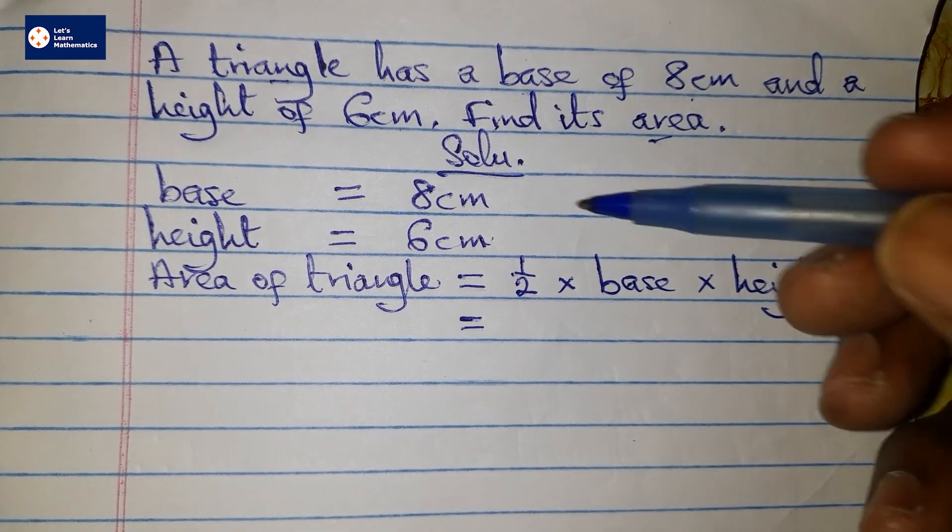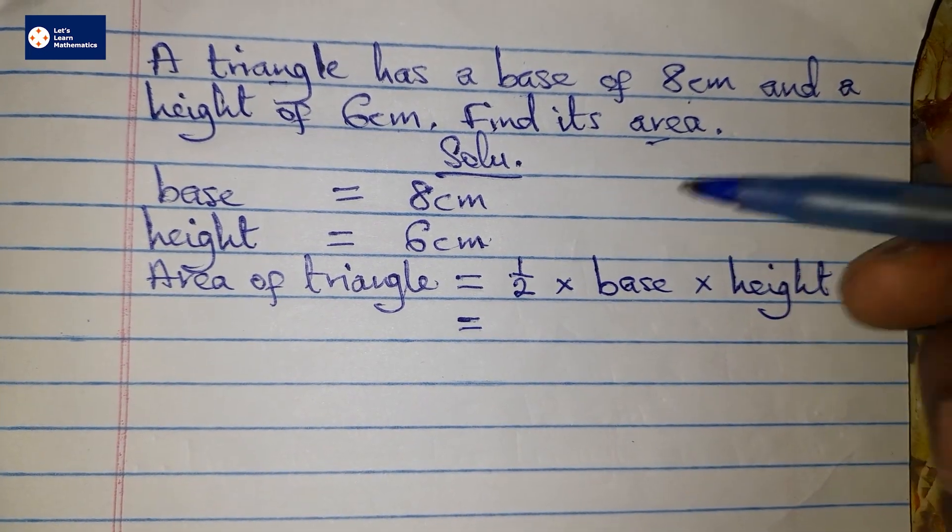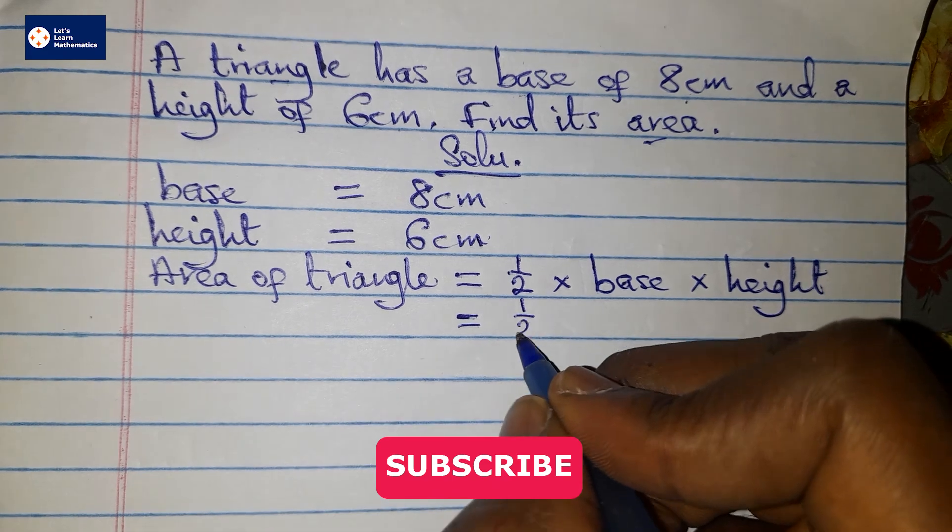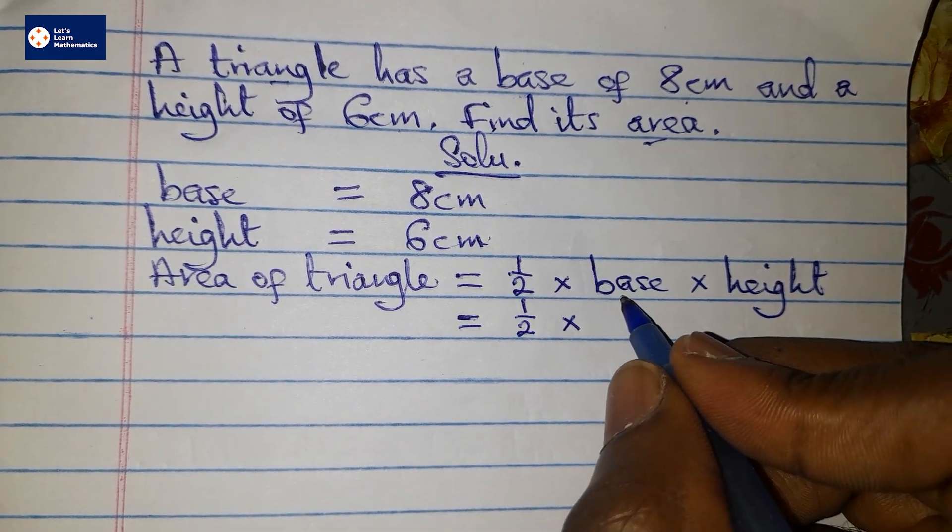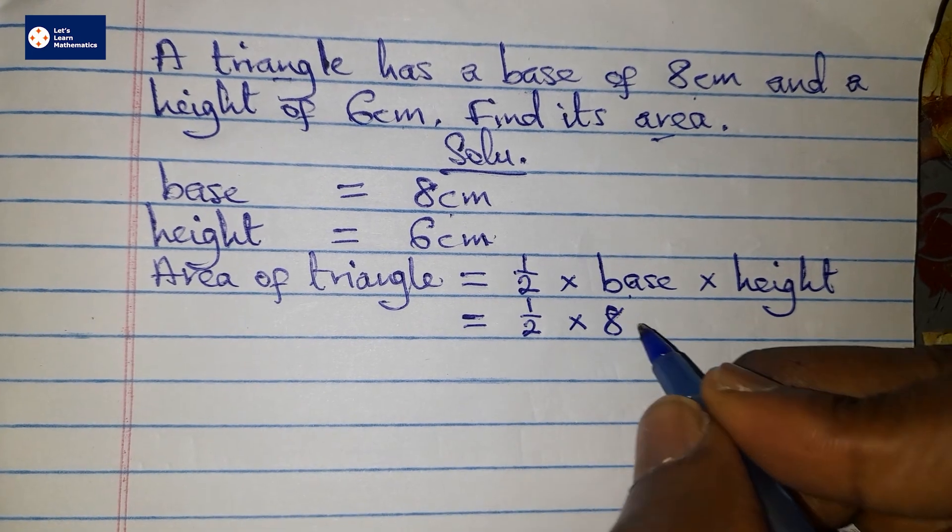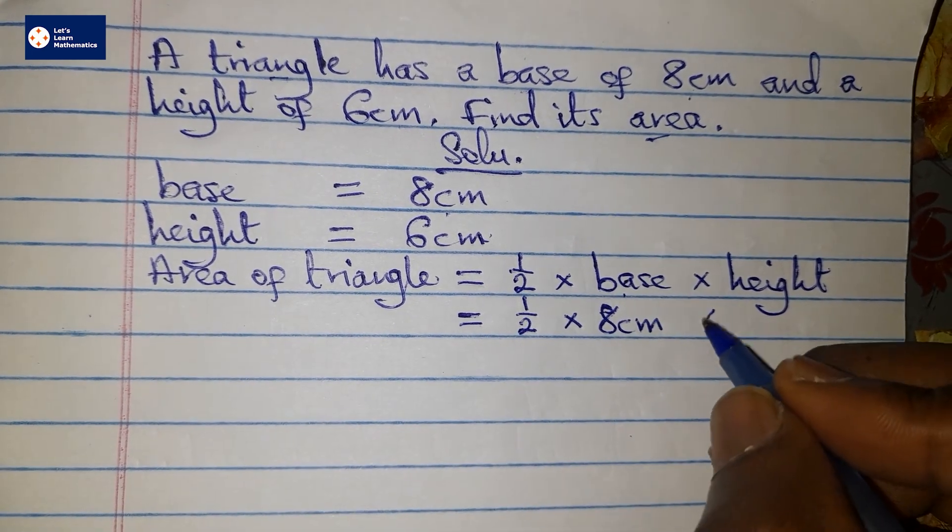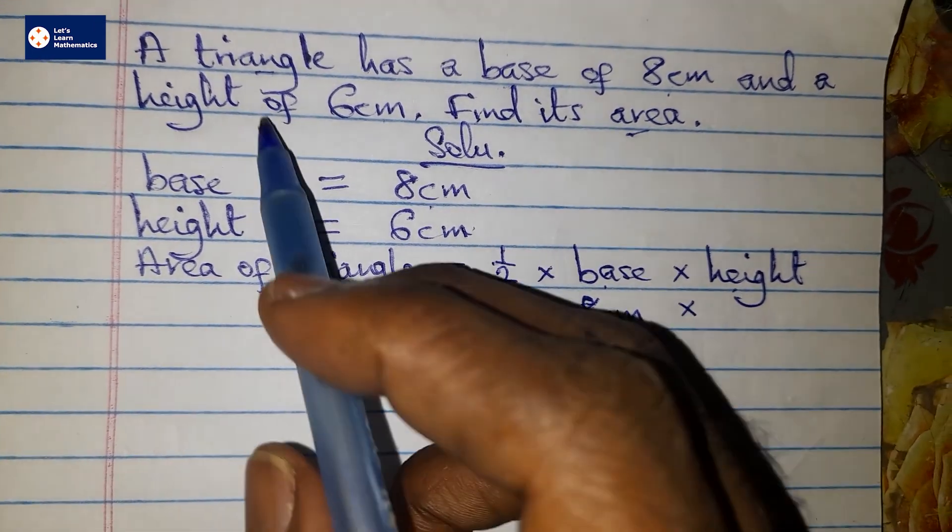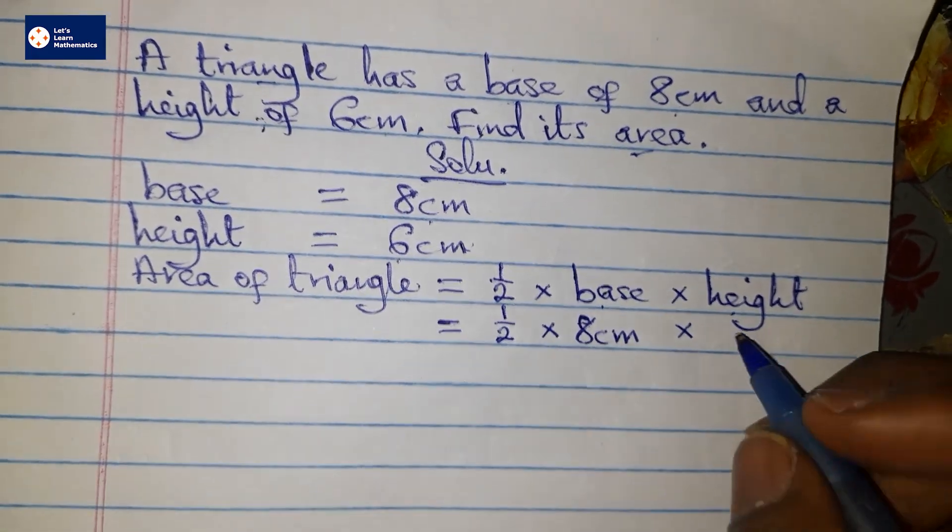And from here, all that we have to do is substitution. I have half times my base, from the question is 8 centimeters, so I'll write that. Then my height from the question is also 6 centimeters.